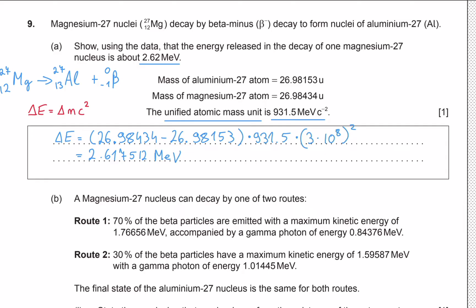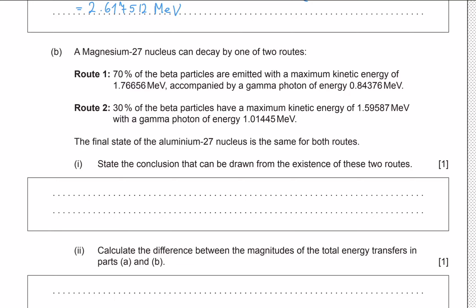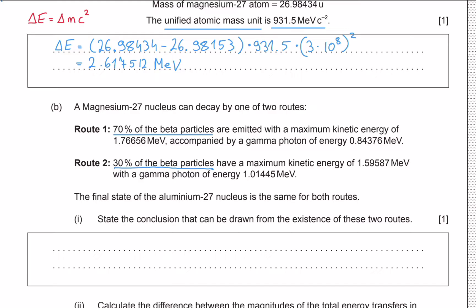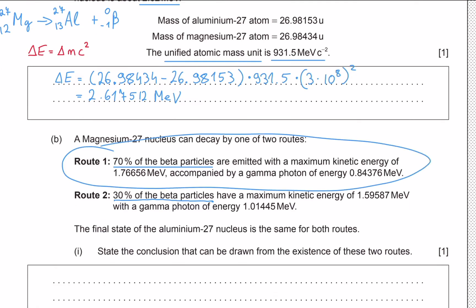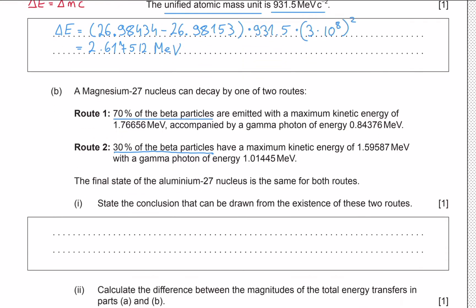This method is much easier as we just multiply by a constant to convert atomic mass units to energy. In part (b), we are told that magnesium-27 can decay by one of two routes. In route 1, 70% of the beta minus particles have a certain kinetic energy accompanied by a gamma photon. In route 2, 30% of the beta particles have lower kinetic energy and emit a gamma photon of higher energy. We are told the final state of aluminium-27 is the same for both routes.